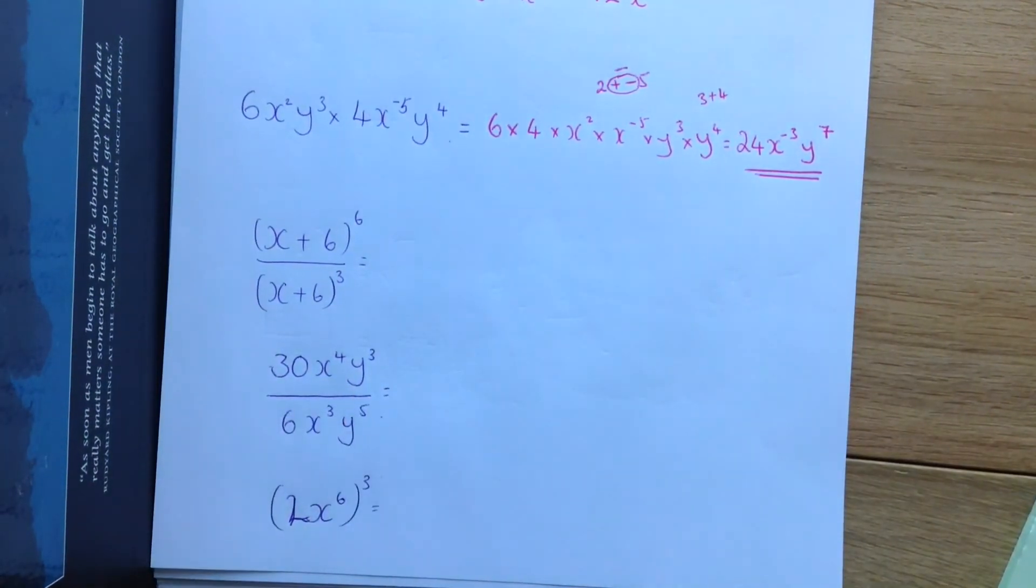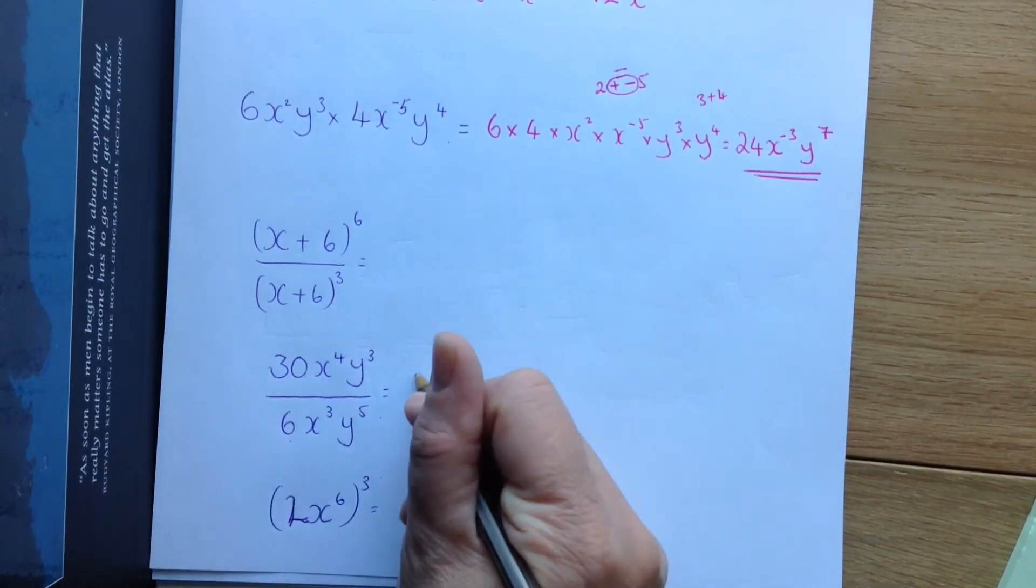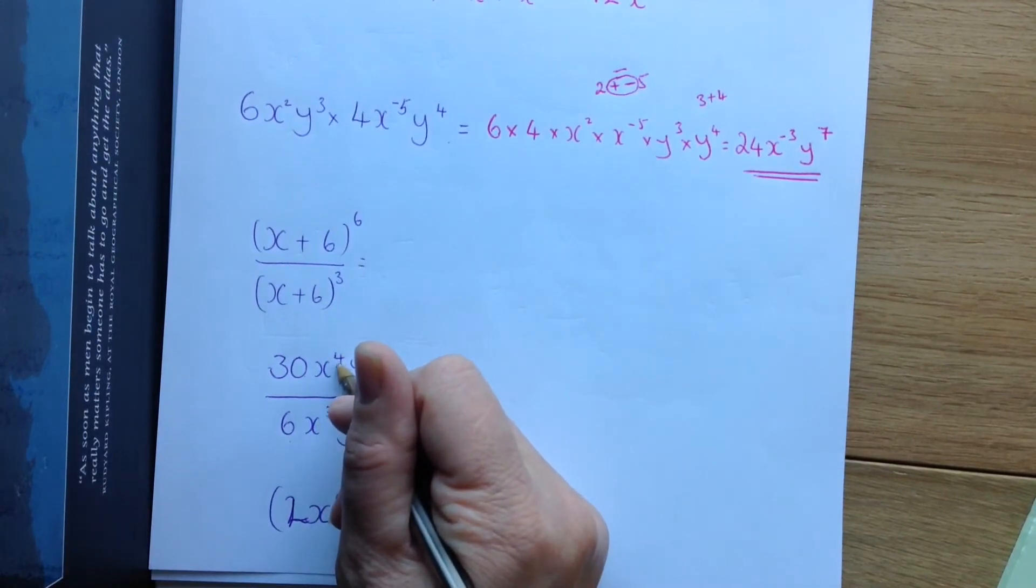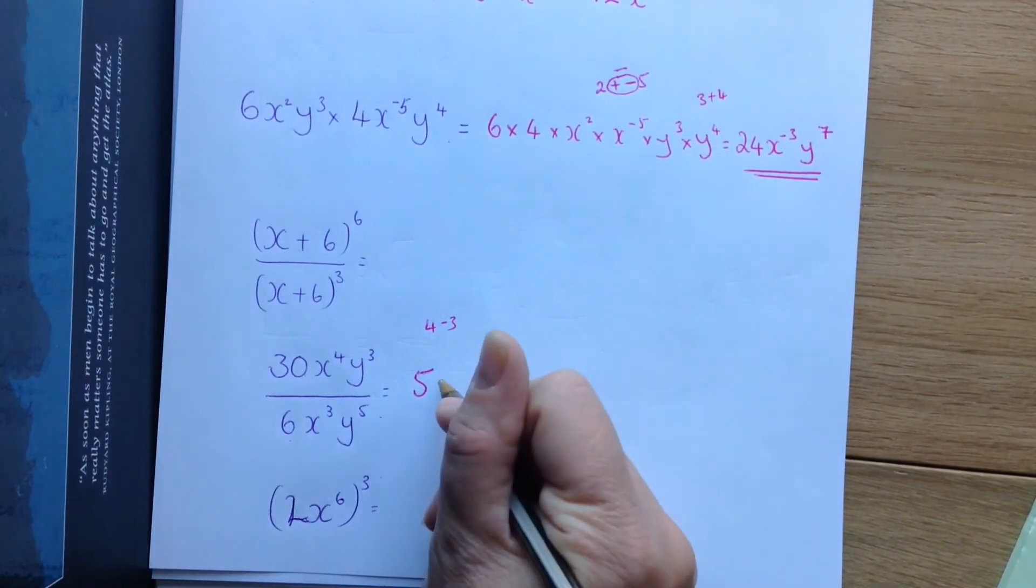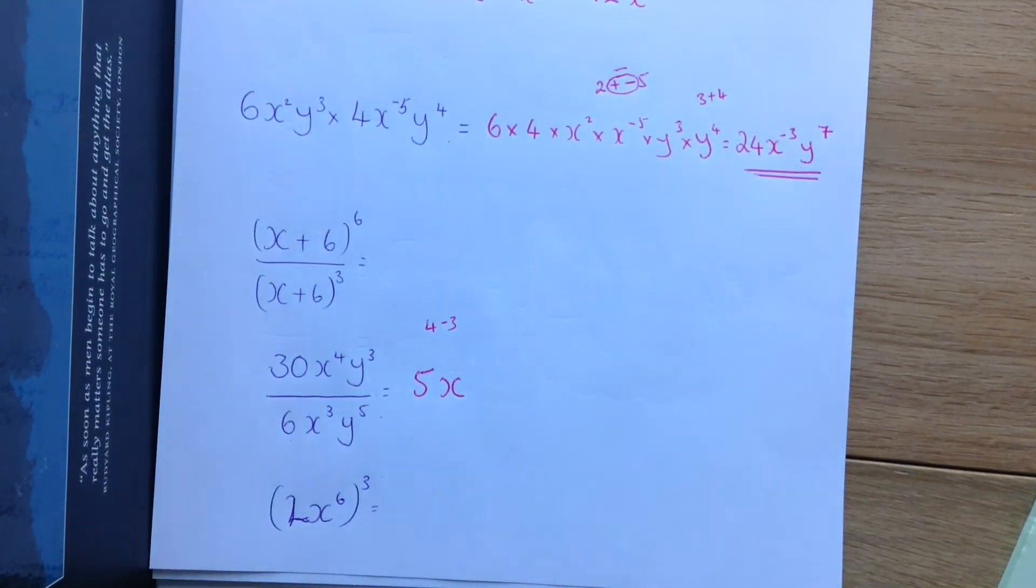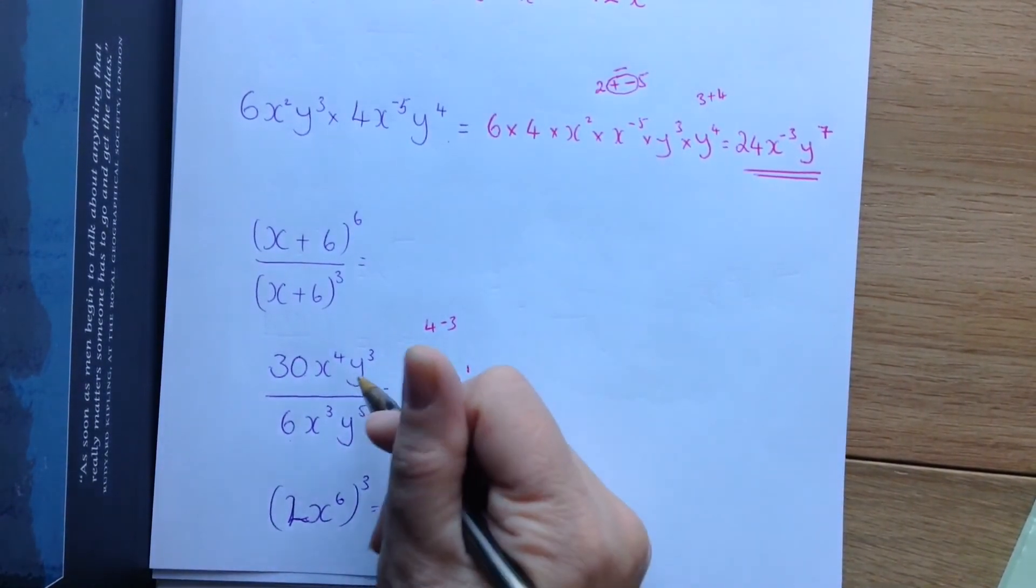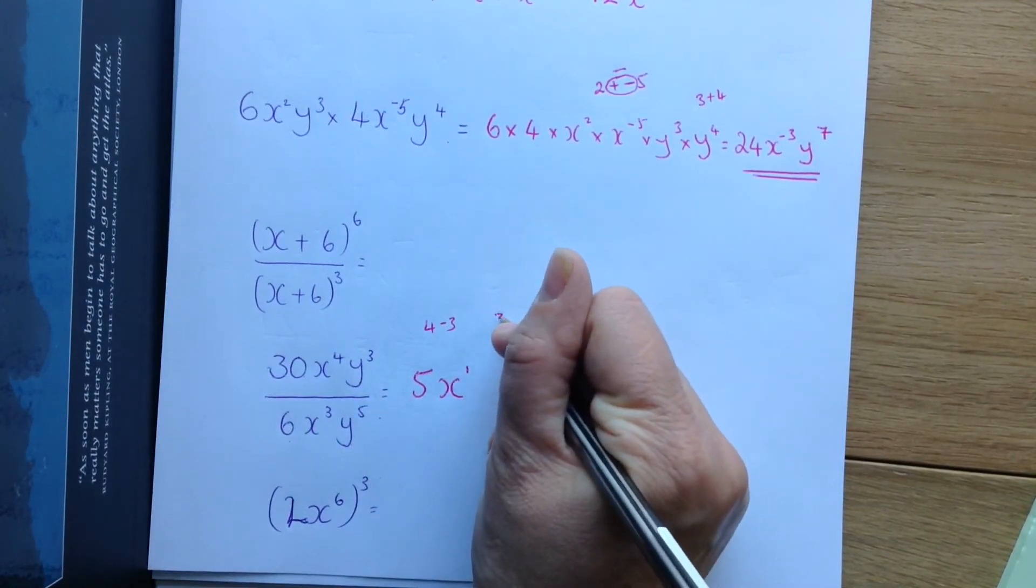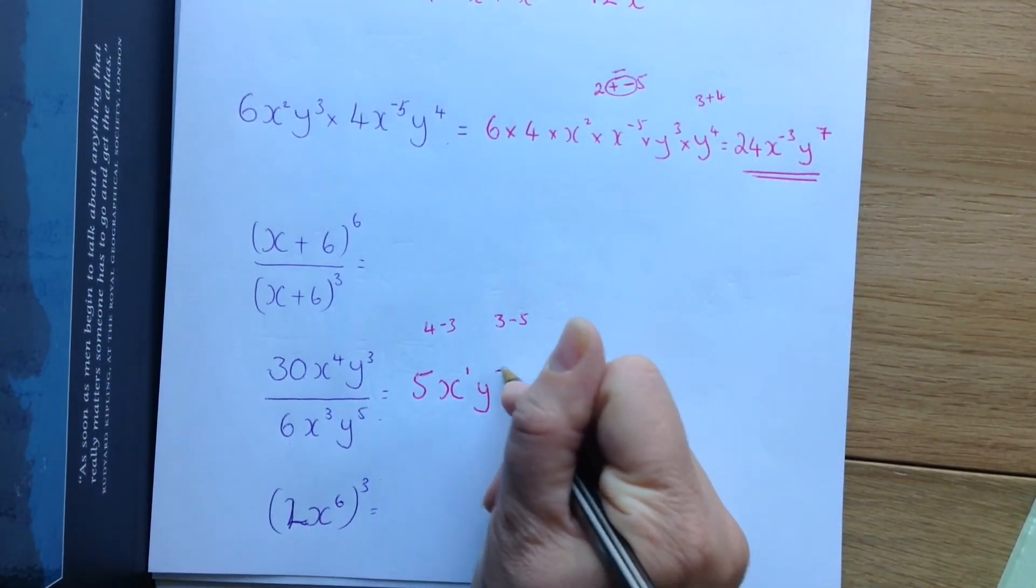Looking at this example, I am going to do the same thing. I am going to do 30 divided by 6 and that is 5. Now, I am going to do x to the power of 4 divided by x to the power of 3. So, I am going to do 4 minus 3 which is 1. So, x to the power of 1. I don't need to put the 1 in. And finally, y to the power of 3 divided by y to the power of 5. So, taking the powers away, 3 minus 5 which is minus 2. So, y to the minus 2.